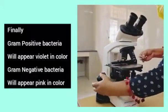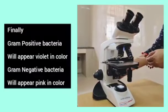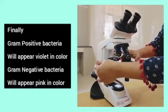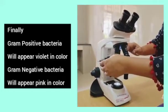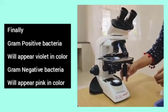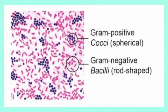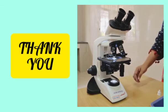Therefore, finally, the gram positive bacteria will appear violet in color and gram negative bacteria will appear pink in color. Thank you.